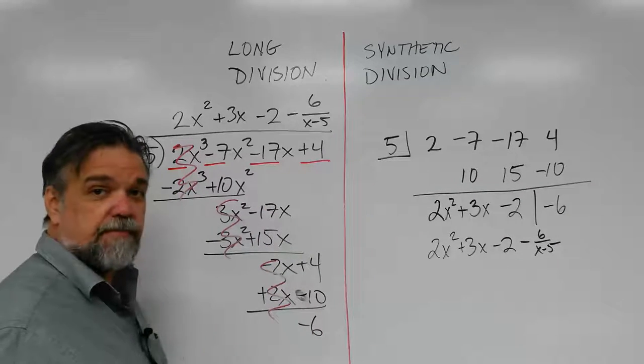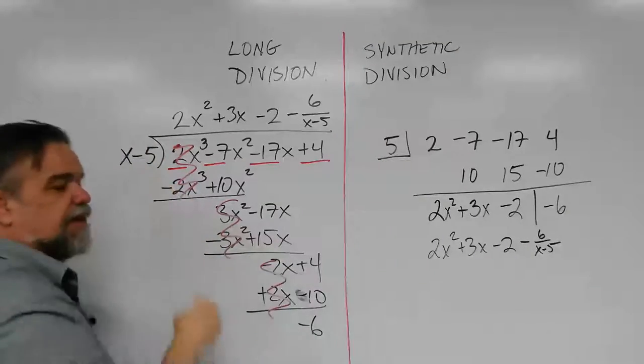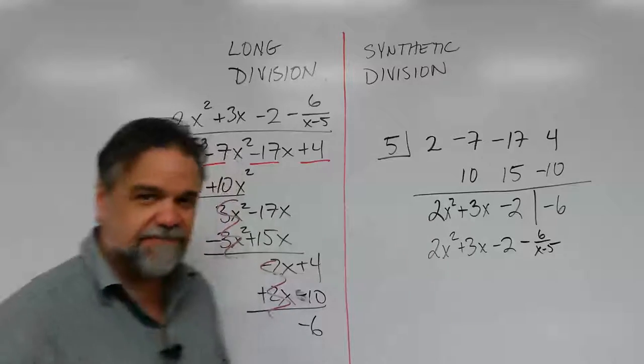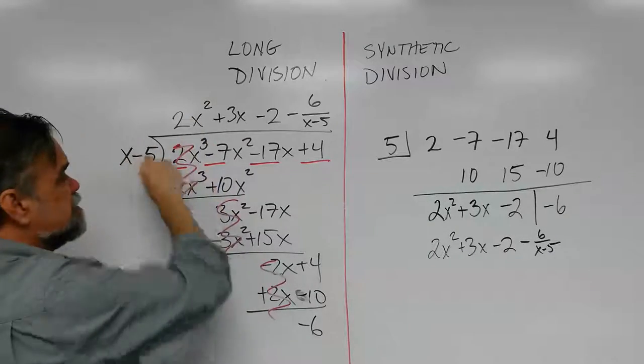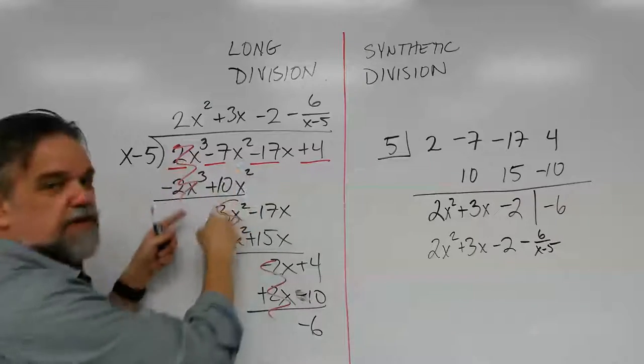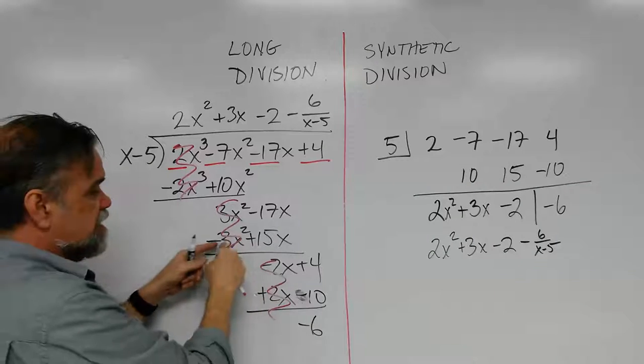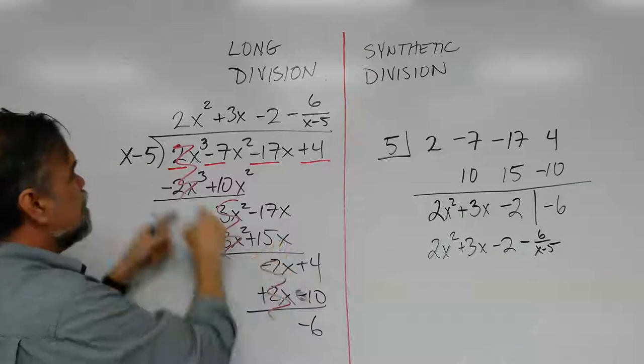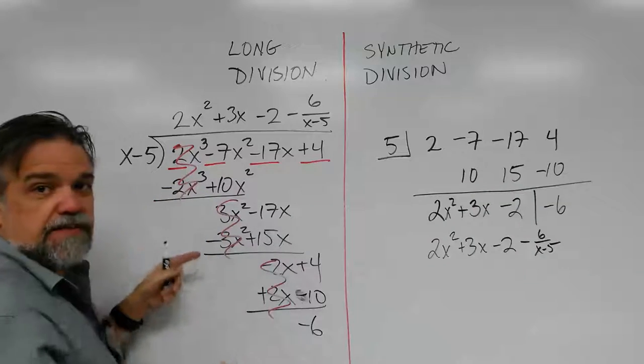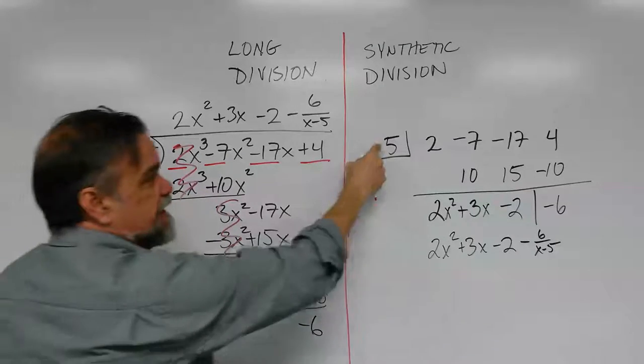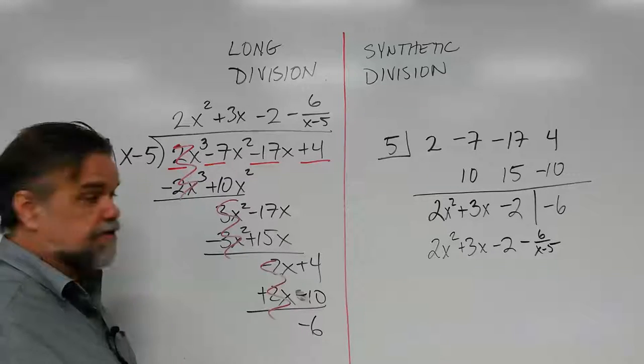One other question that I bet you might have is, why'd you write a 5 there instead of a negative 5? Good question. And there's a good answer too. You remember, we would multiply and then every time because we were subtracting, we would change the sign and then add. Change the sign and then add. Well, instead of changing the sign down here, why don't we just change the sign right there before we multiply and then all the other signs get changed automatically? That's what we're doing right there. So it's a very quick way to get your answer.